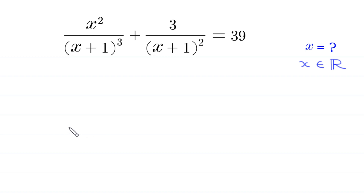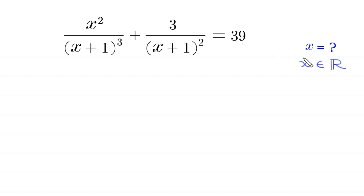Hello everyone, welcome. We are going to solve this very nice algebra equation: x squared over (x+1), whole cubed, plus 3 over (x+1), whole squared, is equal to 39. Our job is to find all possible values of x such that x is a real number. So let's start.